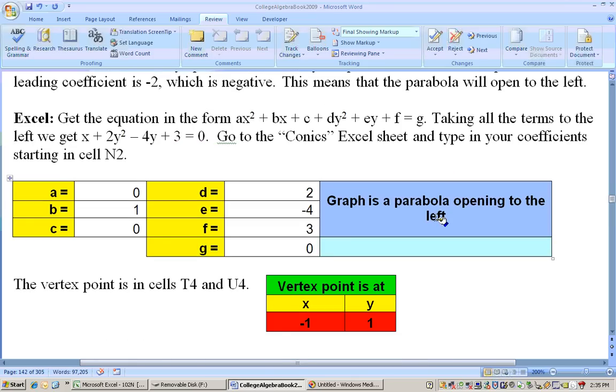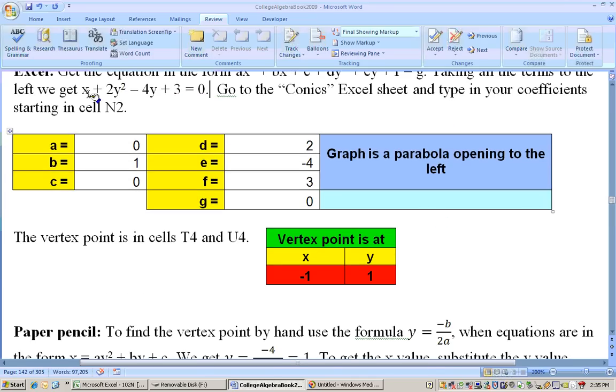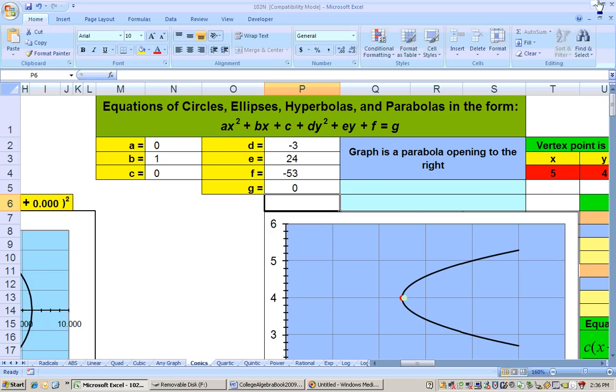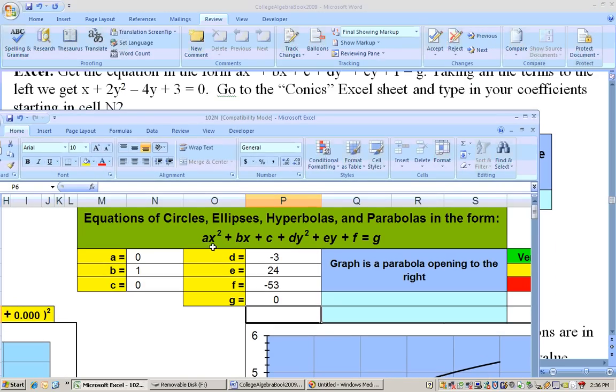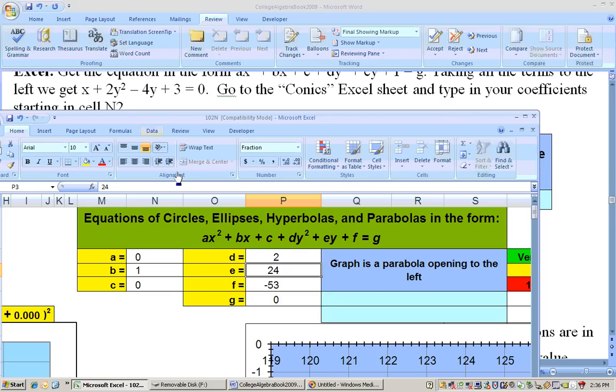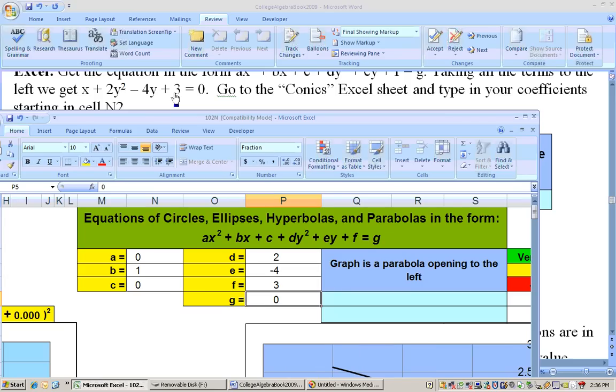And let me scroll up here a little bit so we can see the equation and type it in at the same time. So let me shrink this down. And here we go. So my a is the number in front of the x squared, which there isn't any, so that's 0. My b is in front of the x, which is 1, 1x right there. My c is no constant here with the x's. My d is 2. So let's put in a 2 right here. The e is a -4. The f is 3. And the constant on the other side is 0.